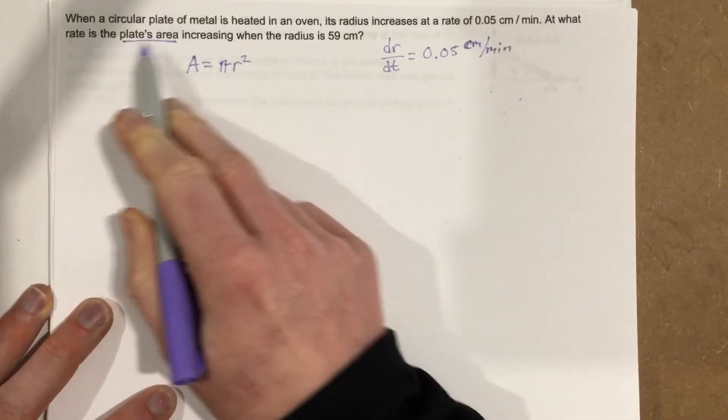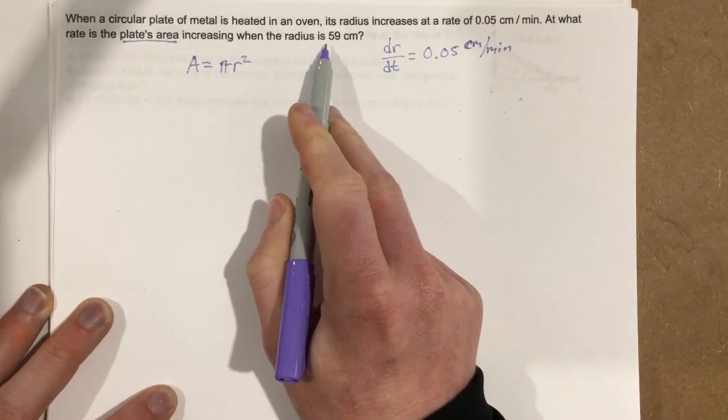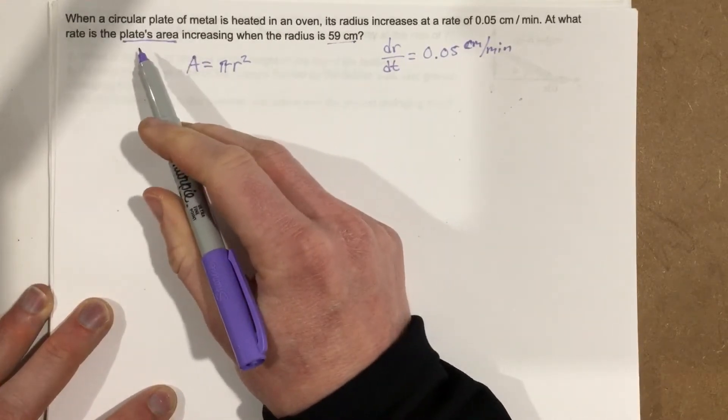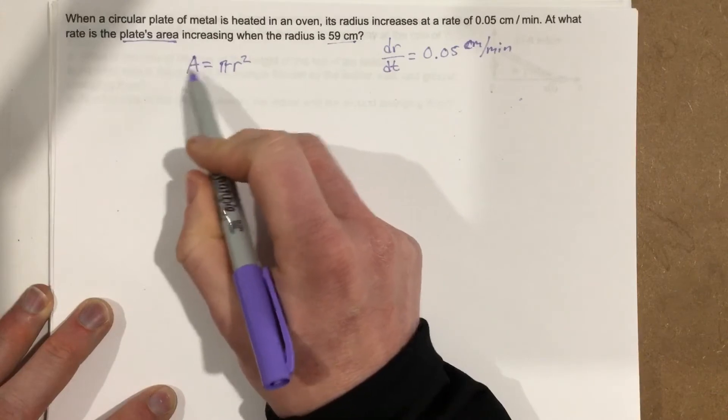And then it says, at what rate is the plate's area increasing when the radius is 59 centimeters? So if they want to know the rate that the plate's area is increasing, we have to take the derivative of that.